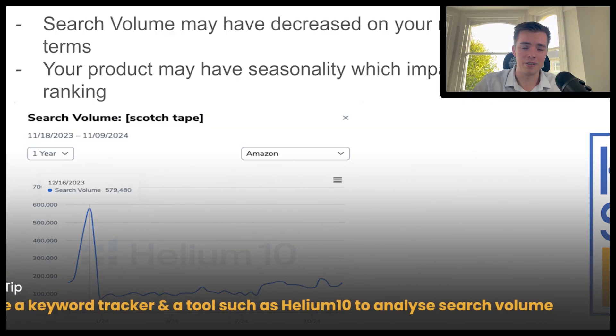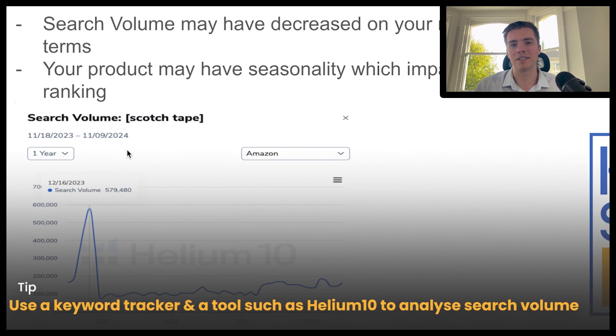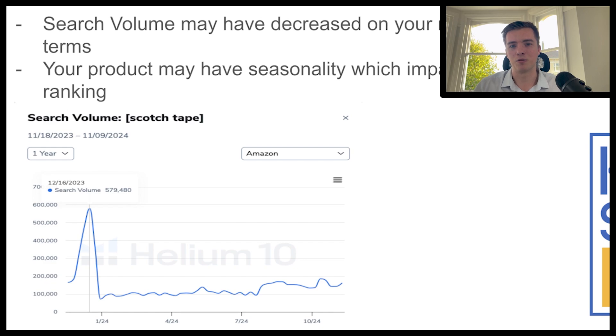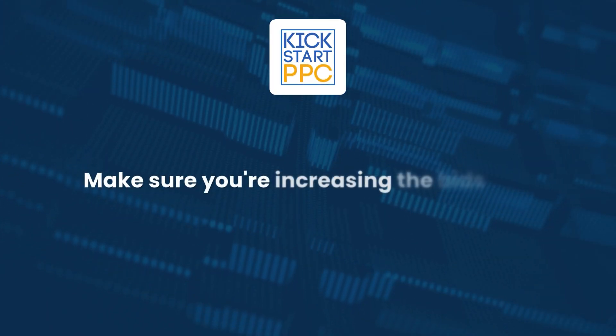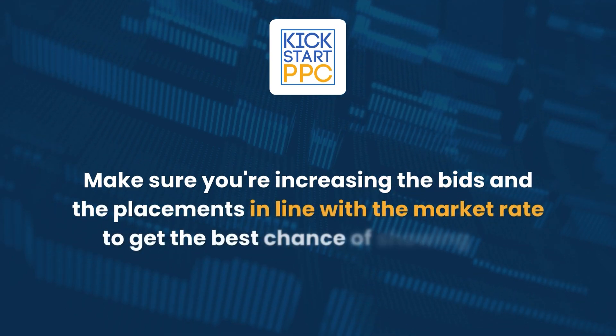It's always a constant optimization process — always looking at what keywords you should be targeting, which ones you shouldn't, or maybe bidding less on. Use a tool like Helium 10, use a keyword tracker, and get on top of this. It's going to make a big difference. You might find some keywords you're not bidding as high on now have higher search volume than they did six months ago, so make sure you're increasing bids and placements in line with market rate to get the best chance of showing up.